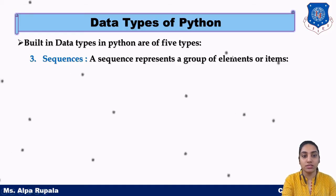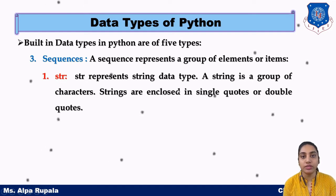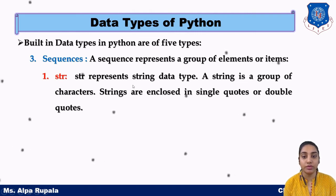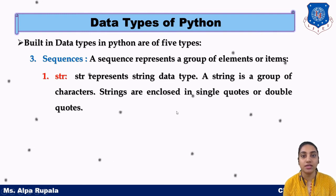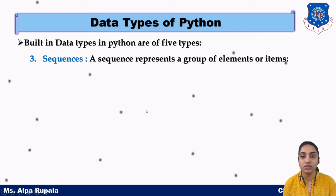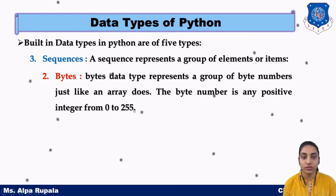Next is sequences. We have basically six types of sequences. The first one is string — we can assign a string value to a variable, enclosed in single or double quotation marks. We can also define a multiple-line string in Python. The next one is bytes, which takes values from 0 to 255.